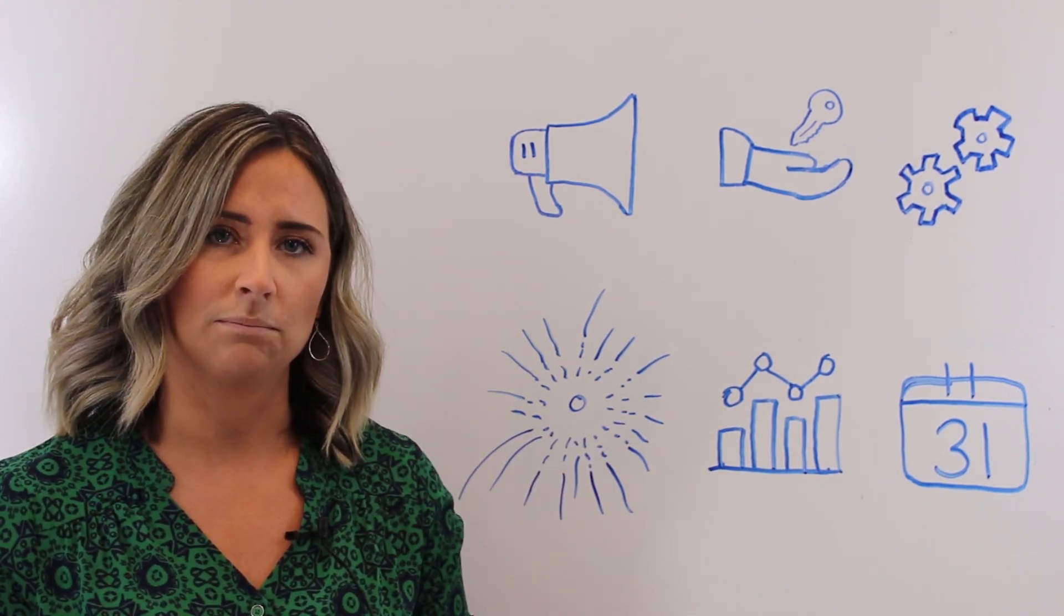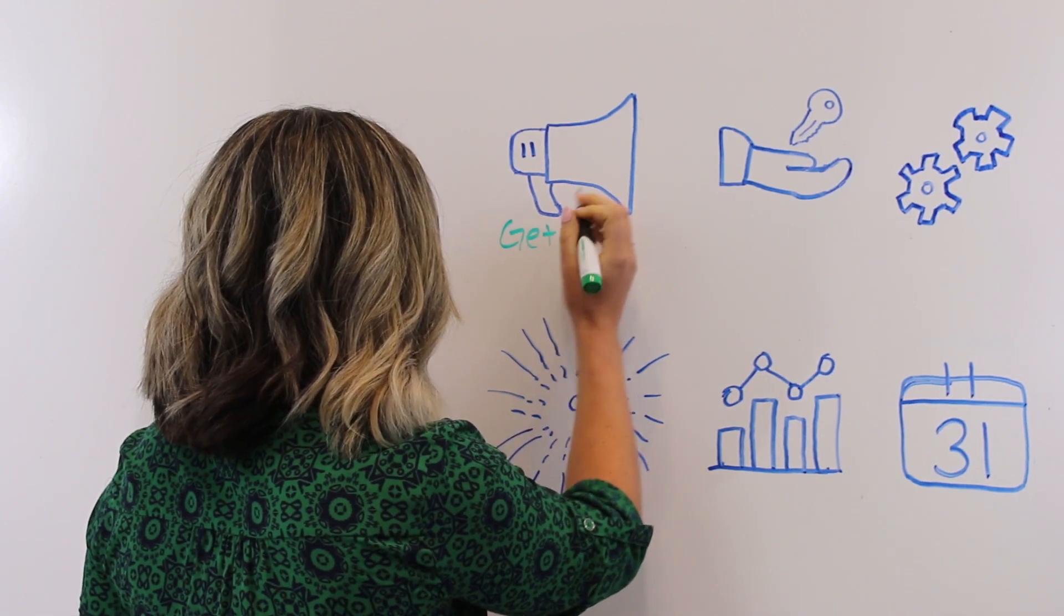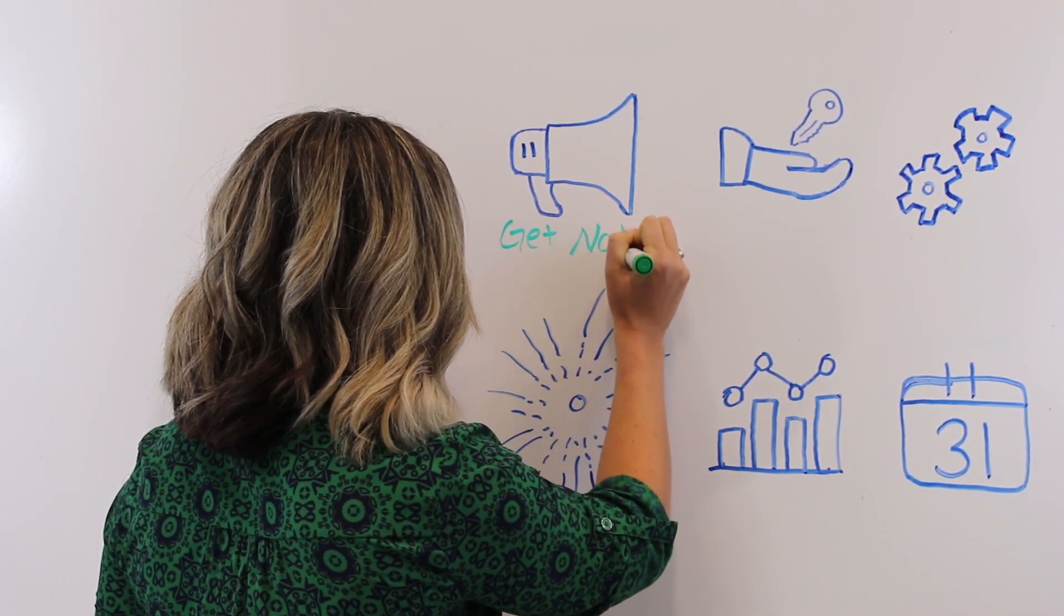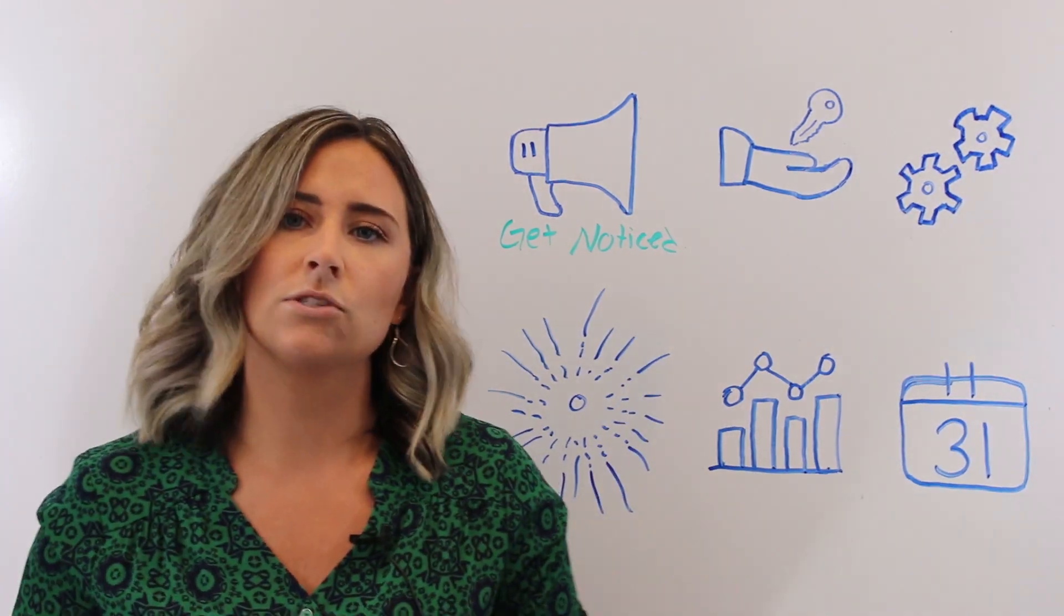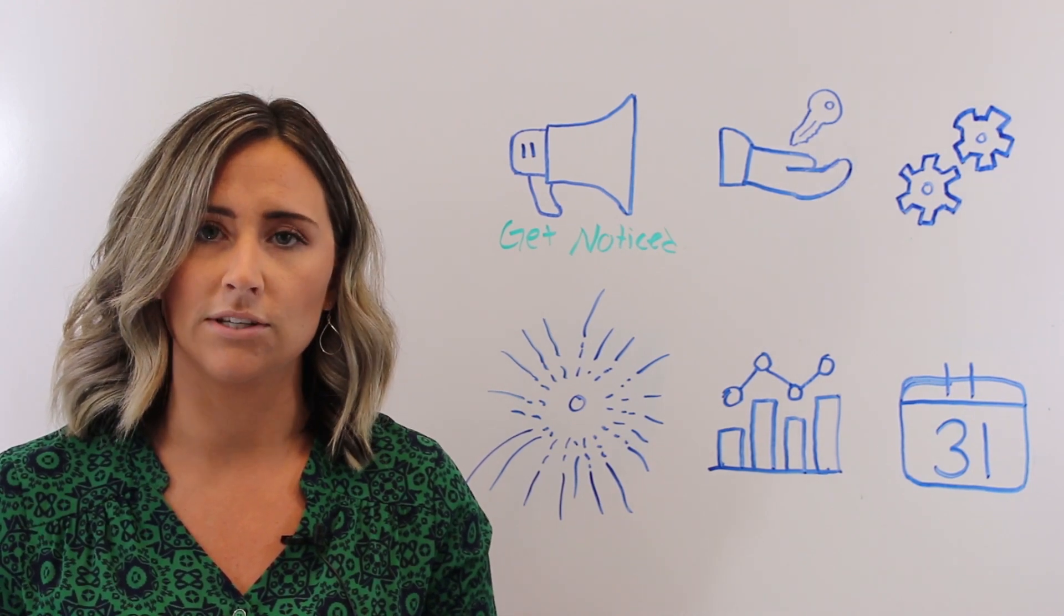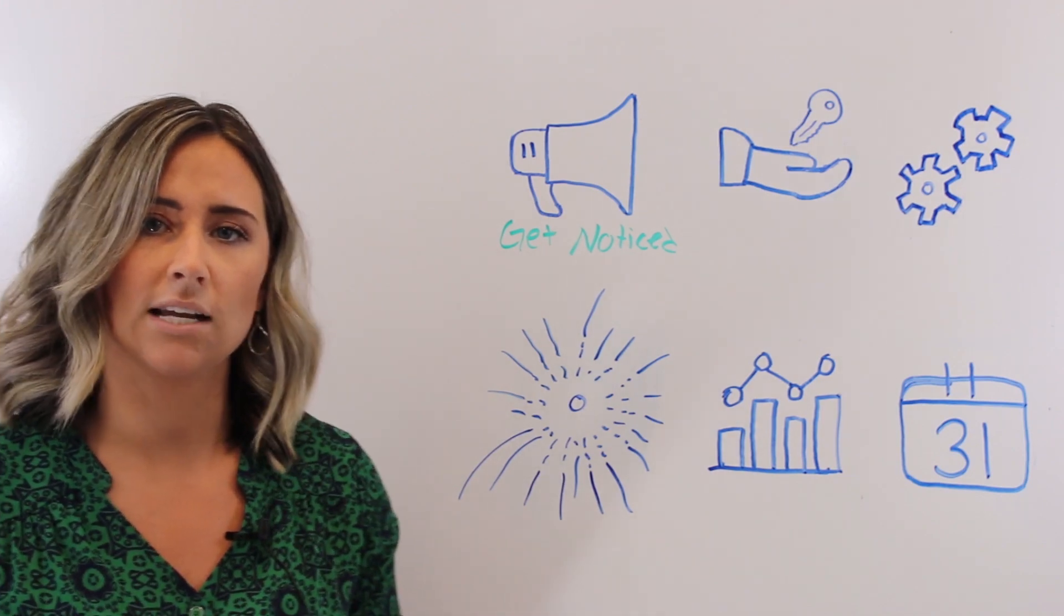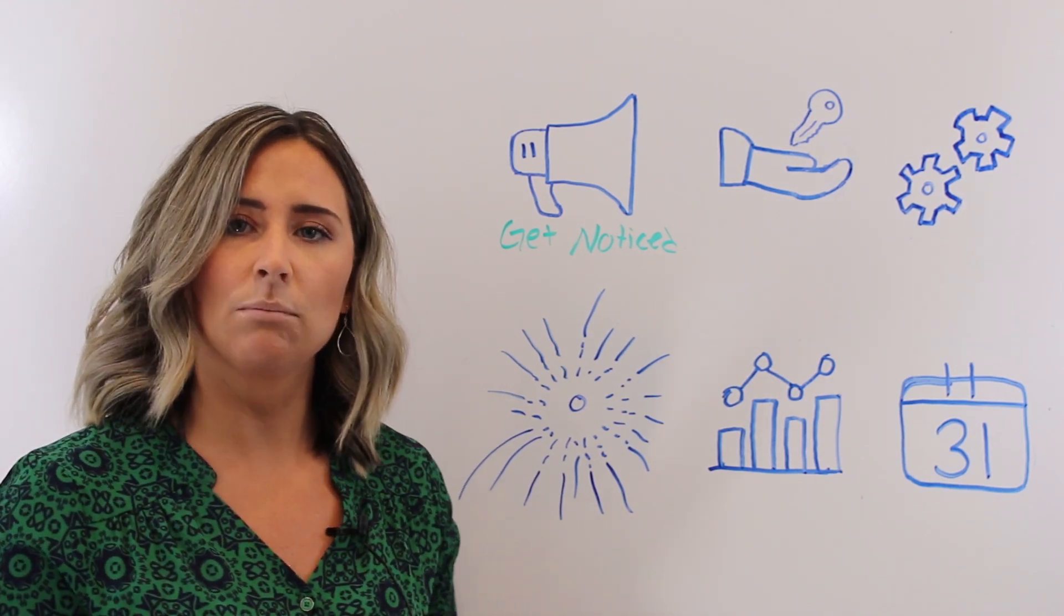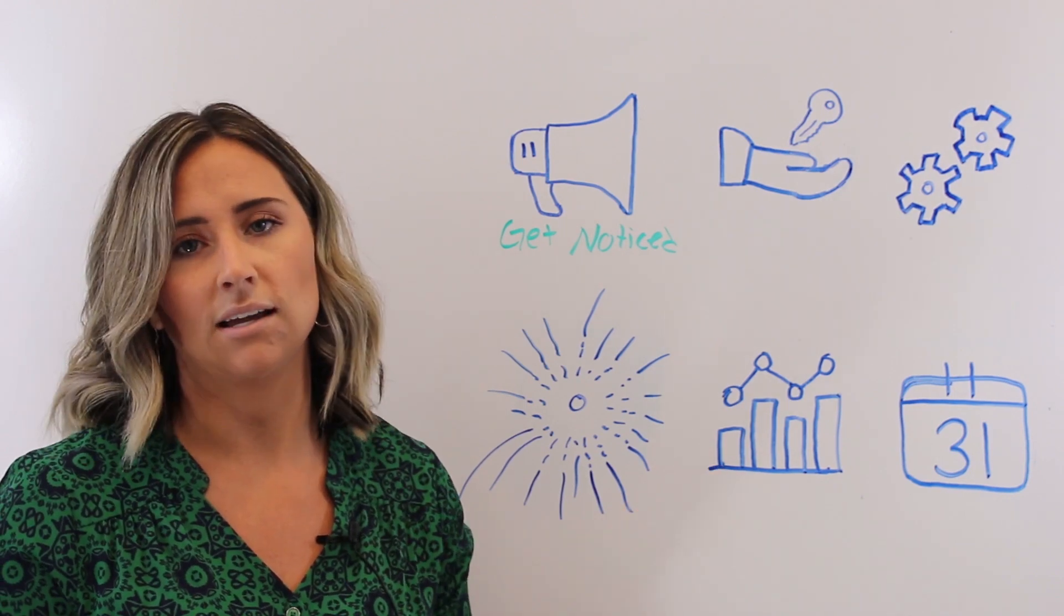The first stage is Get Noticed. You want to get your property noticed by potential residents. In today's day and age, most online and consumer buying cycles start with online research, so you want to make sure your properties are standing out on Google and you're seamlessly able to publish all of your available units with pricing out to the ILS sites, and your property manager can easily do that.